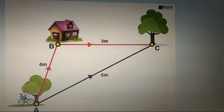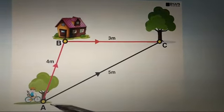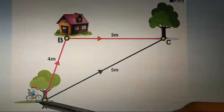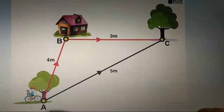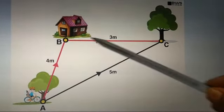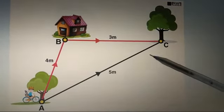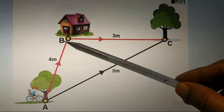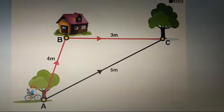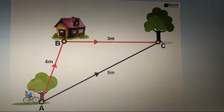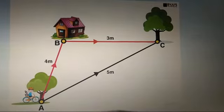We will clearly understand distance and displacement. See, this is a boy Pranap. He starts moving from point A to point B and from point B to point C. So here, distance covered is 4 meters plus 3 meters, that is 7 meters. But for displacement, what do you have to find?